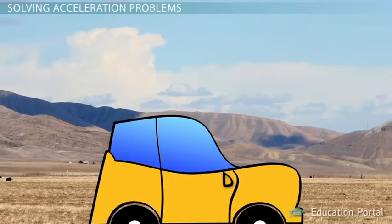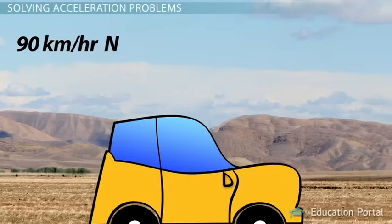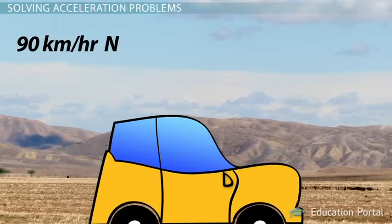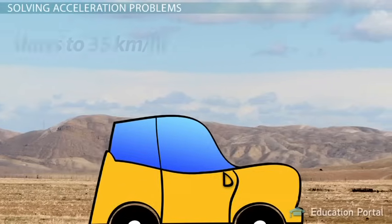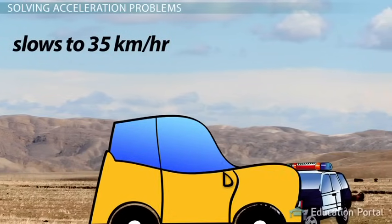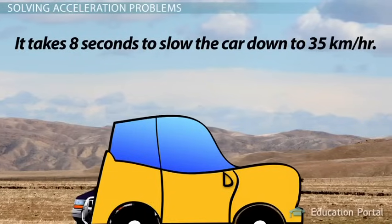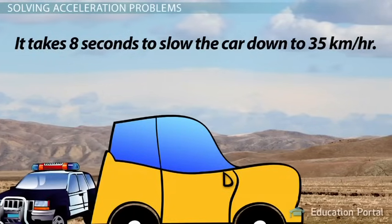Let's look at another example. A driver traveling north at 90 kilometers per hour in a zone with a speed limit of 40 kilometers per hour sees a police officer. The driver slows to 35 kilometers per hour to avoid getting a speeding ticket. It takes 8 seconds to slow the car down to 35 kilometers per hour. What is the acceleration?